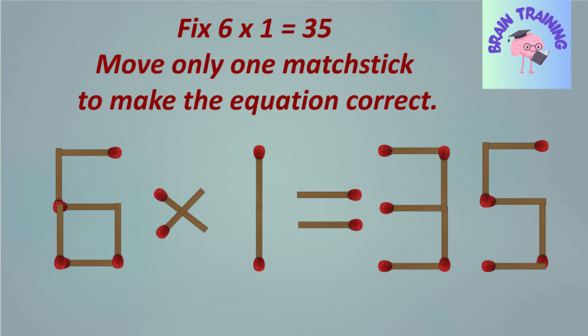The current equation is 6 × 1 = 35 and it's easy to spot the mistake. You will have 15 seconds to solve this puzzle.